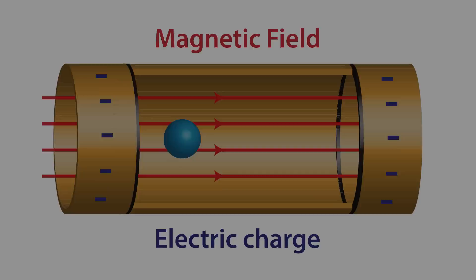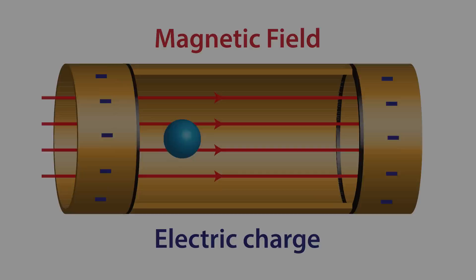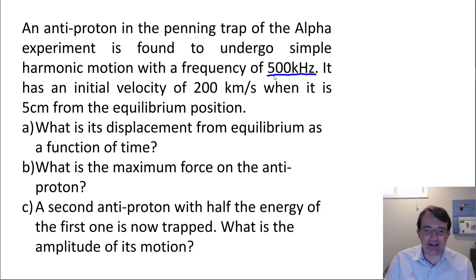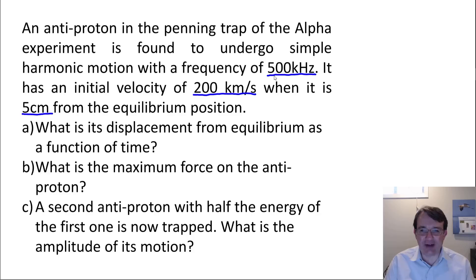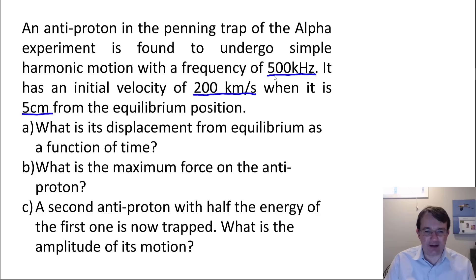That oscillating antiproton is what our question is about. We have an antiproton in the penning trap of the ALPHA experiment undergoing simple harmonic motion with a frequency of 500 kilohertz. It has an initial velocity of 200 kilometers per second when it is 5 centimeters from the equilibrium position. The question asks: what is the displacement from equilibrium as a function of time? What is the maximum force on the antiproton? And if a second antiproton has half the energy of the first, what is the amplitude of its motion?